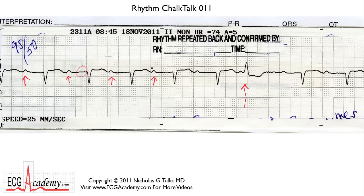So let's start to measure intervals. We take the beginning of the P wave on this heavy line, and you can see the PR interval is about 400 milliseconds. Pretty long, and since it's greater than 200, we call it a first-degree AV block, and it looks to be pretty constant.